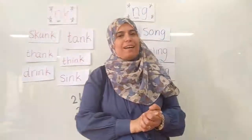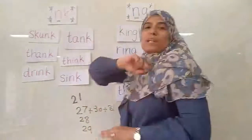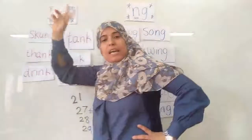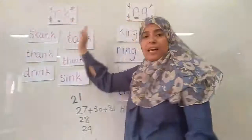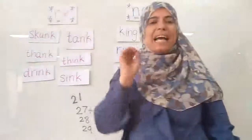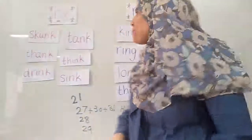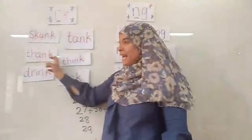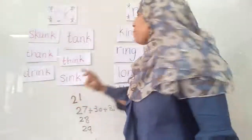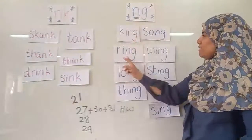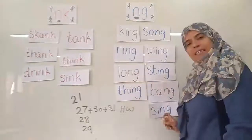Today we discussed the letter N when it comes at the end of a word with the letter K or the letter G. When N comes with K or G, I don't say it as a plain N — I say it differently. Like: skunk, thank, drink, tank, think, sink, king, song, ring, wing, long, sting, thing, bang, sing.